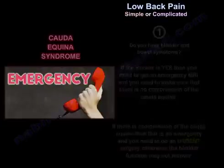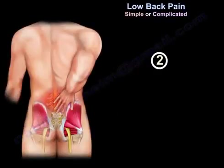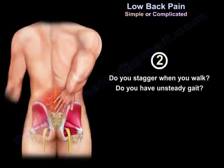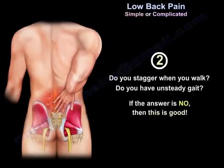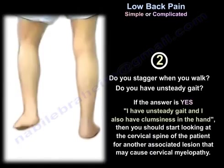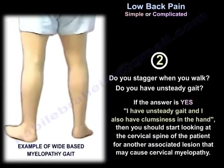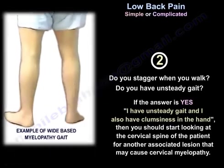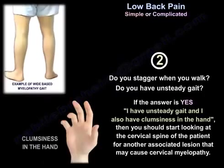The second question: do you stagger when you walk? Do you have unsteady gait? If the answer is no, that's good. If the answer is yes — unsteady gait and also clumsiness in the hand — then you should start looking at the cervical spine for an associated lesion that may cause cervical myelopathy.